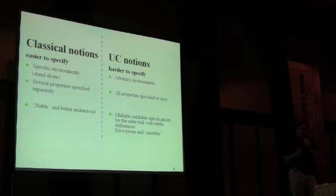The UC notions, on the other hand, are harder to specify because you're supposed to work for arbitrary environments in the living composition and so forth. All the primitives are supposed to be captured once.